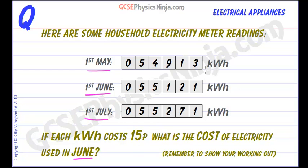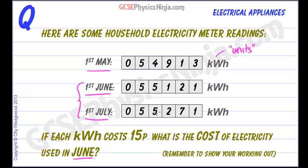These kilowatt hours are measures of energy, and are sometimes called units of electricity. If we are interested in the electricity used in June, we would look at the reading on the first of June, then all the way through June the meter goes round, and at the end of June — on the first of July — we have a new meter reading. So we have to work out the difference between these two readings.